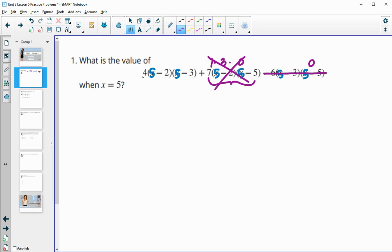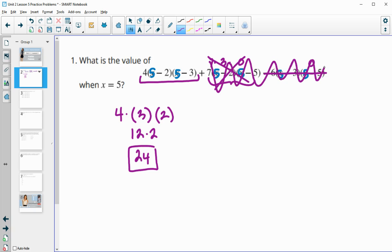So then we really only need to calculate this portion. So 4, 5 minus 2 is 3, 5 minus 3 is 2. So then 4 times 3 is 12 times 2 is 24. So if you have a 0 factor, that whole chunk is going to end up being 0. So none of this, if you notice, is going to need to be calculated.